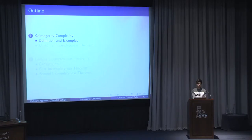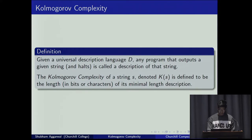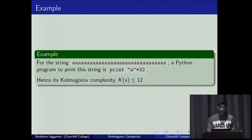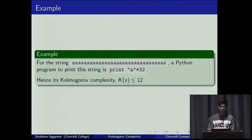For the definition of Kolmogorov complexity, for any programming language you choose, the Kolmogorov complexity of a string is defined to be the length of the shortest program that prints that string. The programming language you choose is called the description language. A good way to illustrate this is with a string of 32 A's — you could write 'print A times 32' in Python, which has a length of 12 characters, so the Kolmogorov complexity is at most 12. I say 'at most' because there might exist a shorter program that also prints the string.